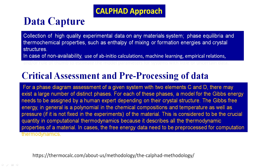For a phase diagram assessment of a given system — say elements C and D, or the aluminum-nickel system — there exist a large number of phases. For each phase, we need a model of its Gibbs free energy. This Gibbs free energy must be assigned by a human expert depending on crystal structure and chemistry. It is in general a polynomial of chemical compositions, thermodynamic temperature, and pressure.